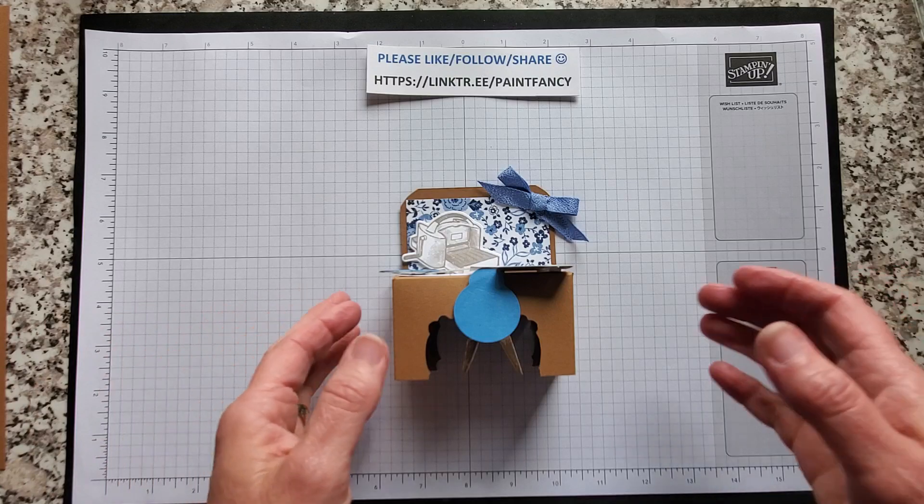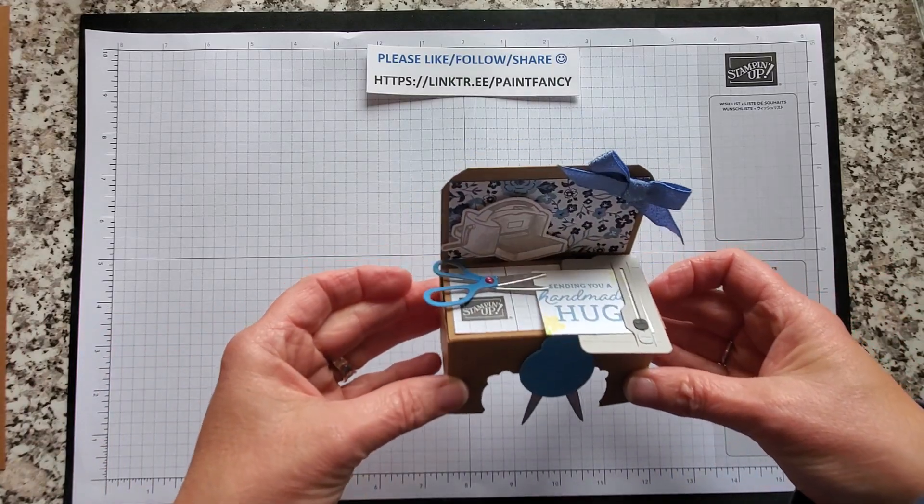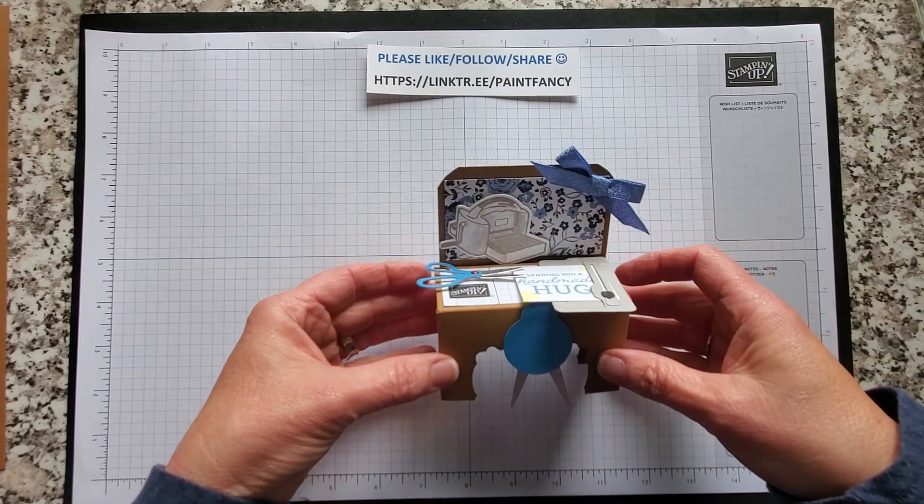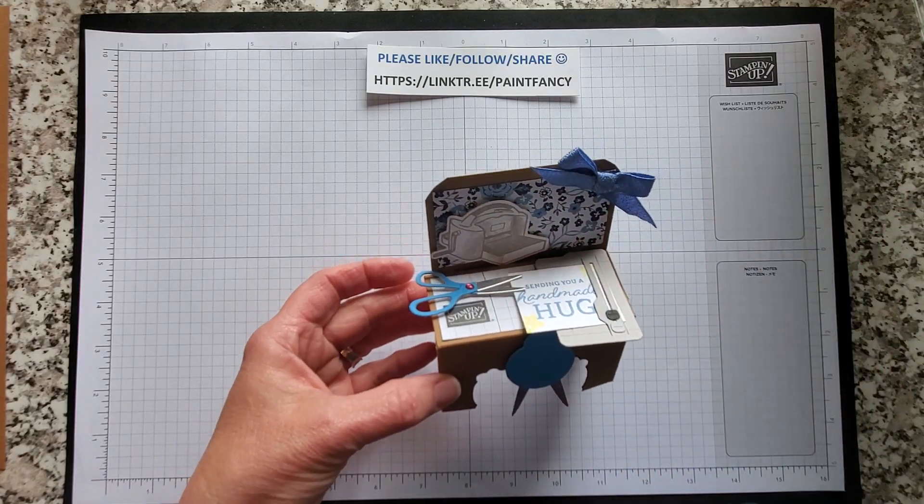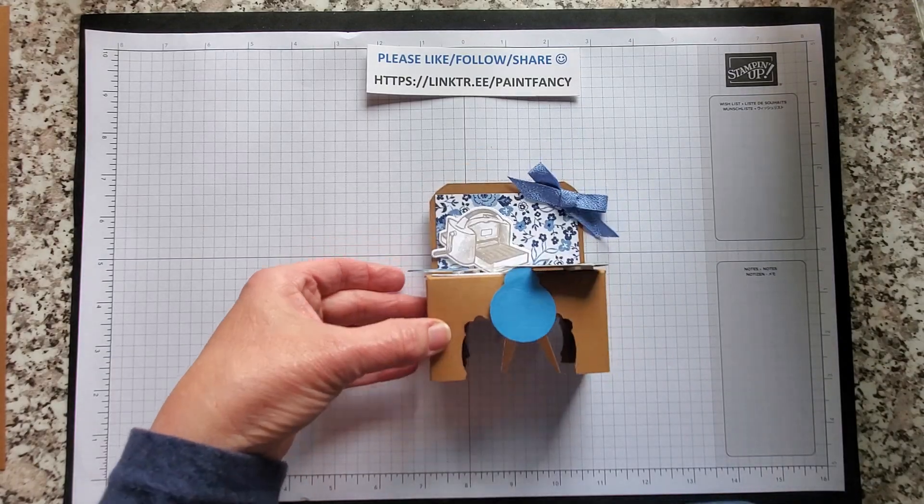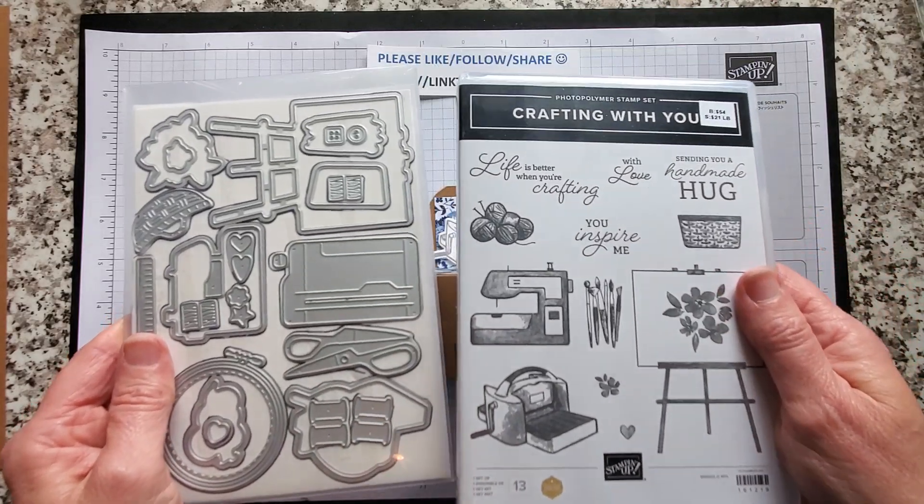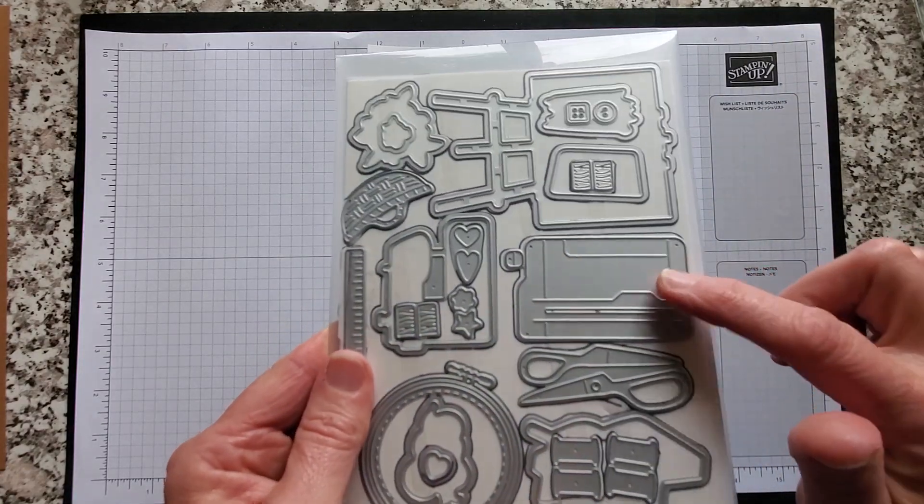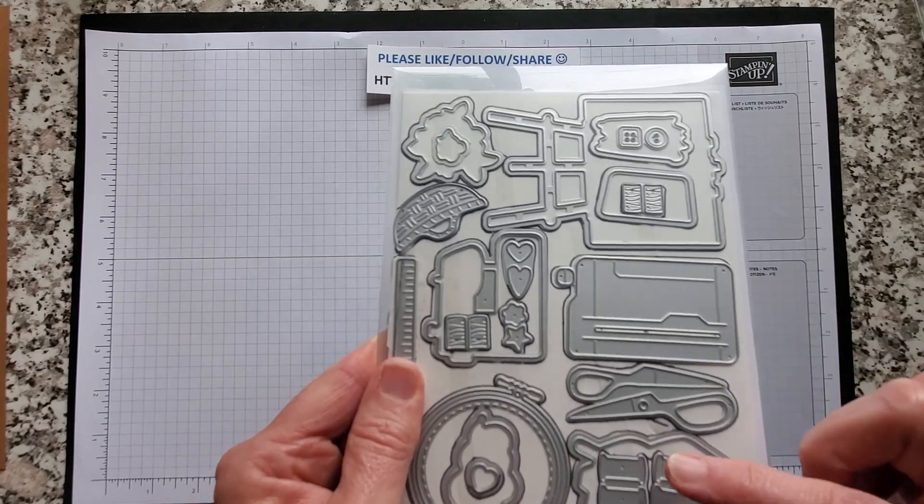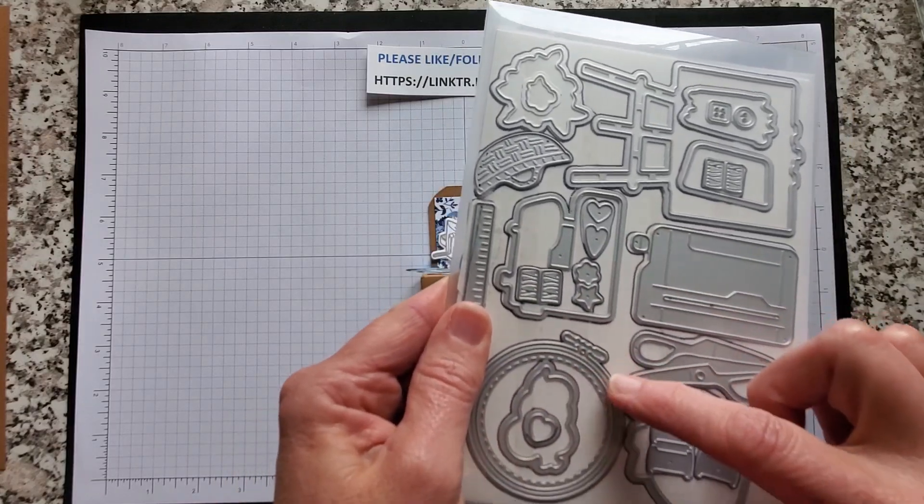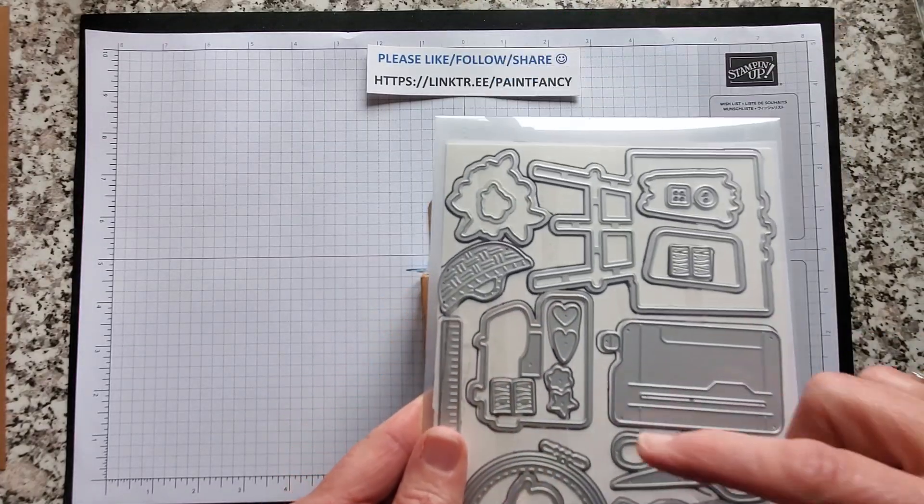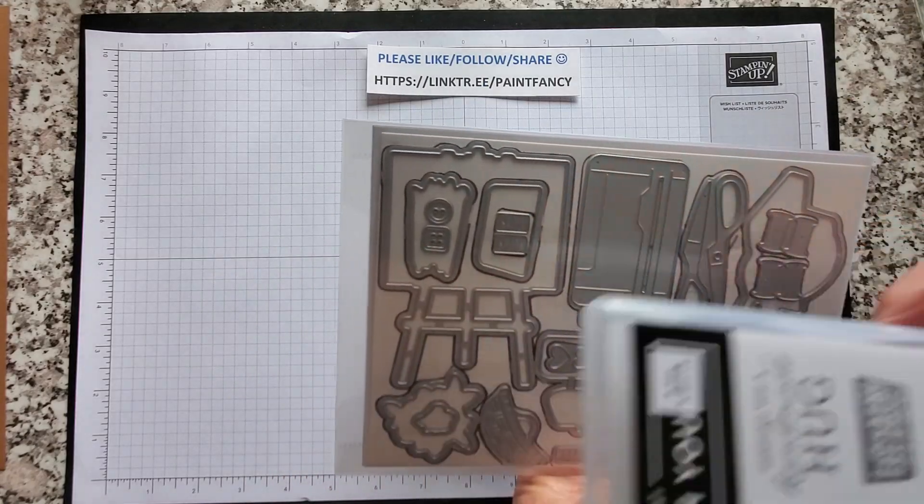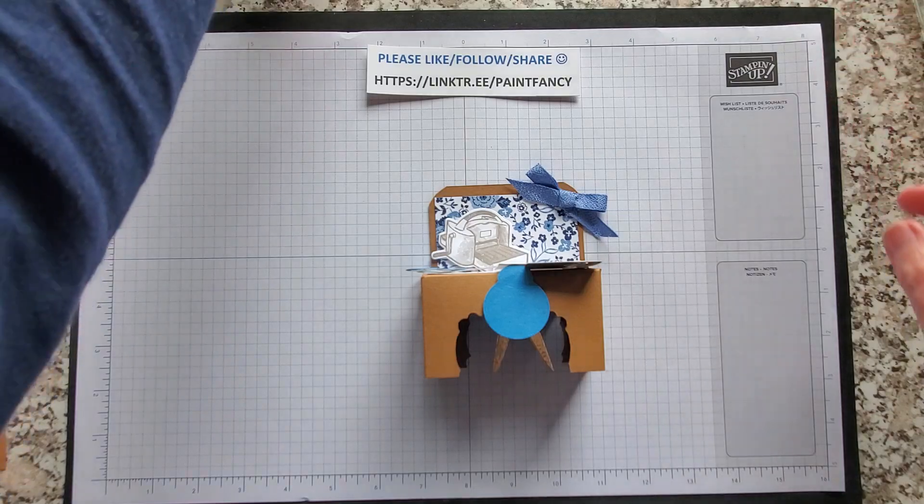But today I wanted to videotape this craft desk that I made for a challenge for my upline, Linda Bowen. And I just love all of these die cuts that are in the new Crafting With You set in the bundle. The bundle comes with lots of fun die cuts: the Stampin' Trimmer, scissors, ribbon, spools of thread, a hoop, a sewing machine and yarn, just a fun set. There's an easel.